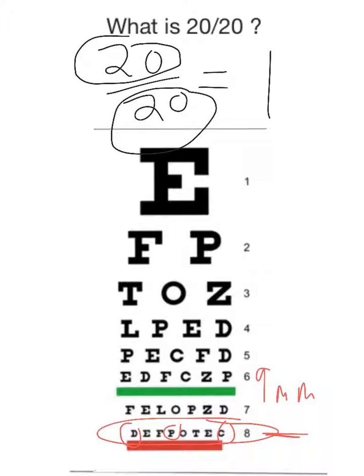Now let's say you're 10 feet away and you can read number 8. So your vision would be 10 divided by 20. Not 20 divided by 20, but 10 divided by 20, which is the same thing as 1 half.